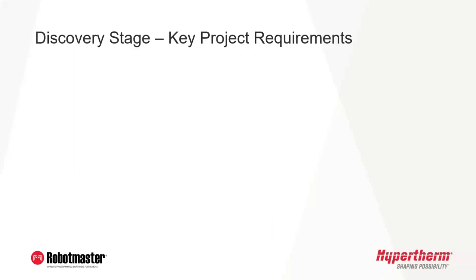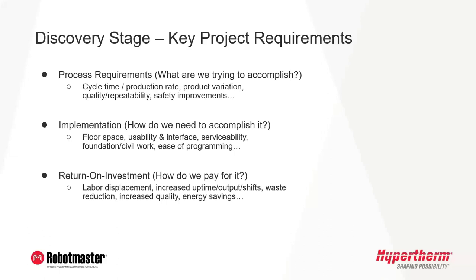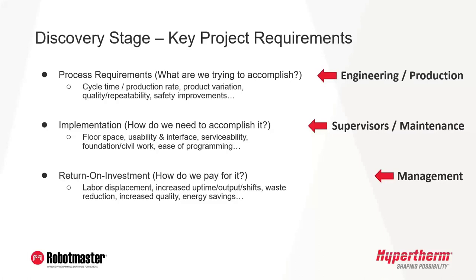There are three main categories of requirements that usually come up when looking at automating a manual process. What are we trying to accomplish with automation? How should we accomplish it? And most importantly, how are we going to pay for all this? A robotic system doesn't make any business sense if the return on investment can't really be quantified. So often these three categories are best guided by three different groups of people: engineering and production for the process, supervisors and maintenance for the implementation, and management or capital projects for the ROI. The best projects do come from good collaboration with all these stakeholders.